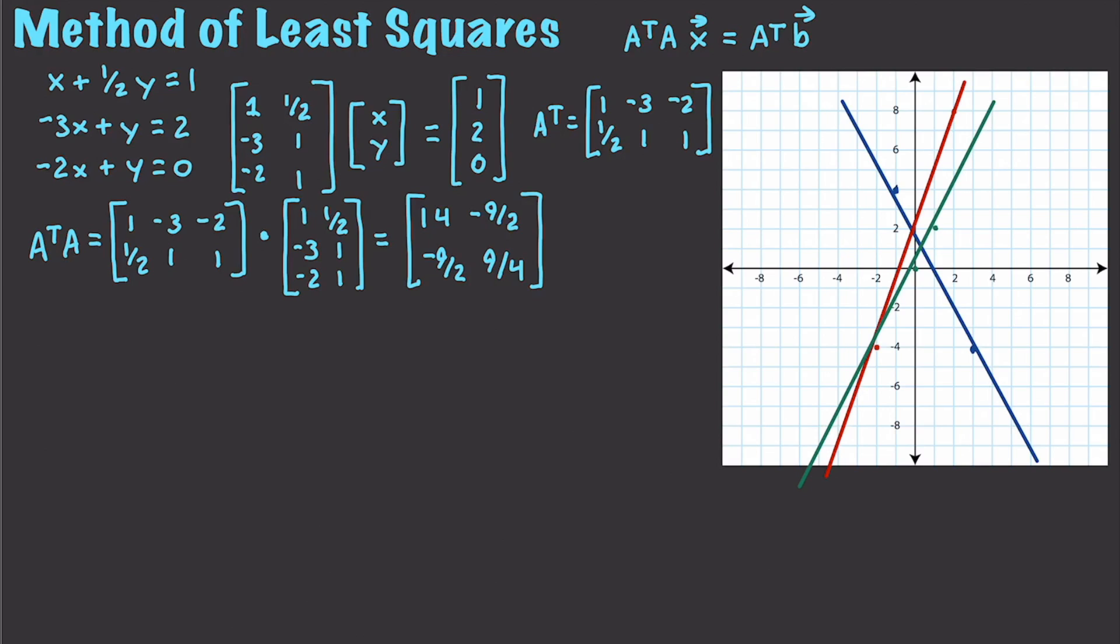Now we go and get A transform times B, which will be equal to 1, 1 half, negative 3, 1, negative 2, 1 times 1, 2, 0, which will be equal to negative 5 and 5 over 2.